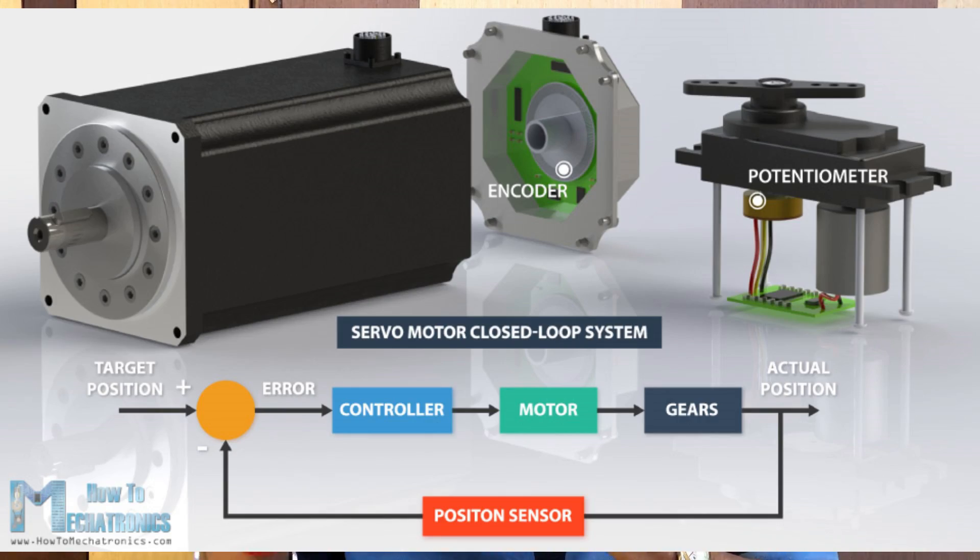The main servo motor uses a closed loop system. There are open loop and closed loop systems. In a closed loop, we have feedback — if you have a control signal, the system provides feedback. In an open loop system, there is a motor supply and a control signal, but no feedback is checked. In a closed loop system, there is a supply motor and a control signal with feedback.